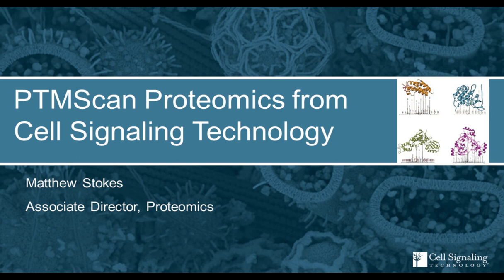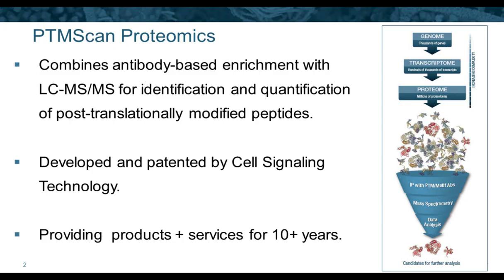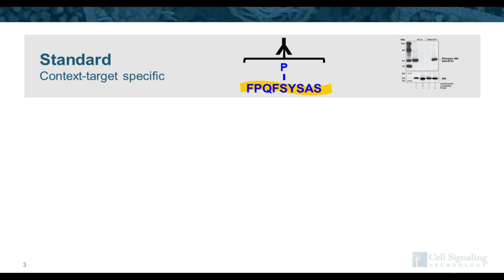Thank you. Welcome, everyone. I'm going to give an overview of the mass spec-based proteomics we're doing here at Cell Signaling Technology, most of which involves what we call PTM scan. PTM scan is a combination of antibody-based enrichments with mass spec to both identify and quantify post-translationally modified peptides. It's a method developed here at CST that we've been doing for over 10 years now. The key to success in PTM scan are the antibodies used for enrichment.